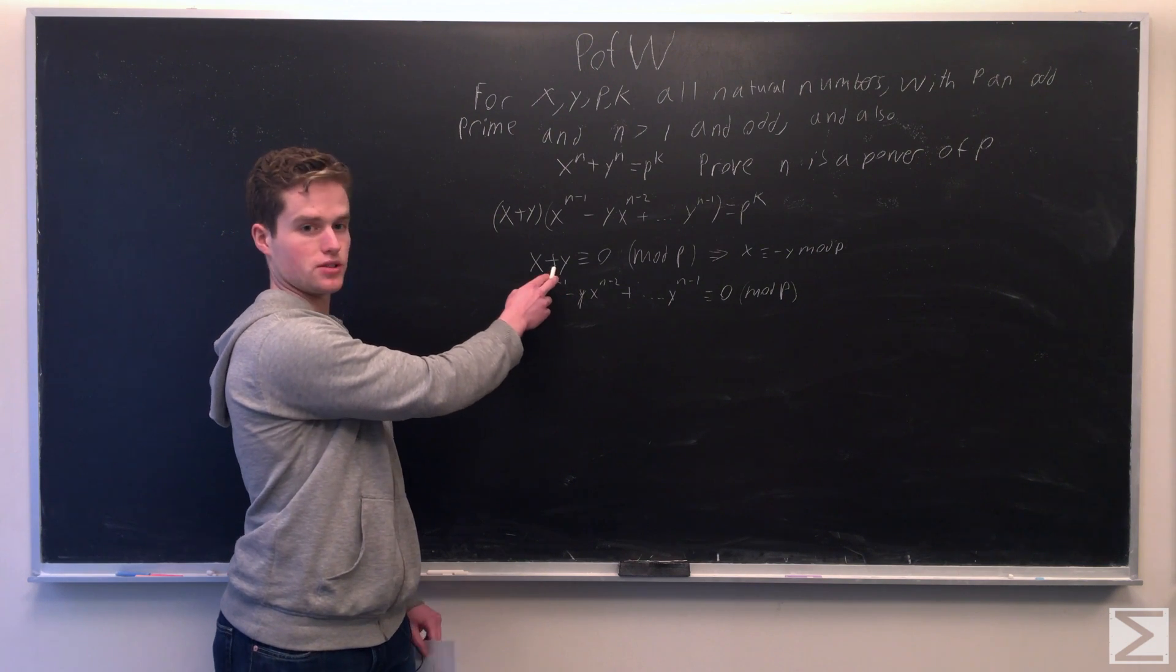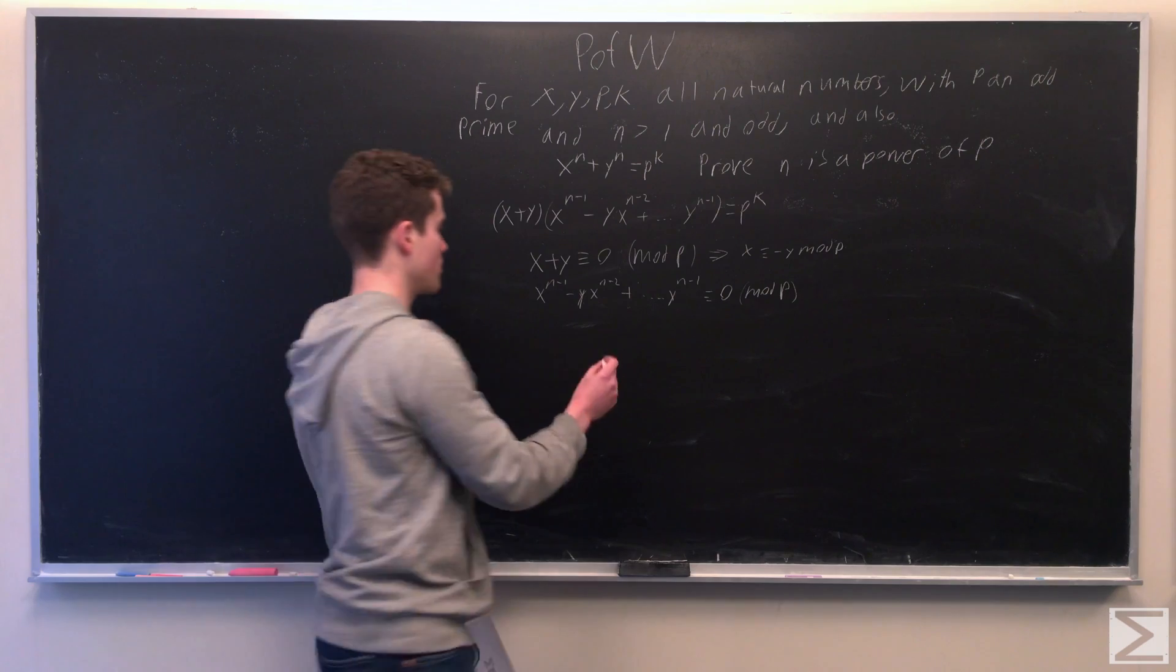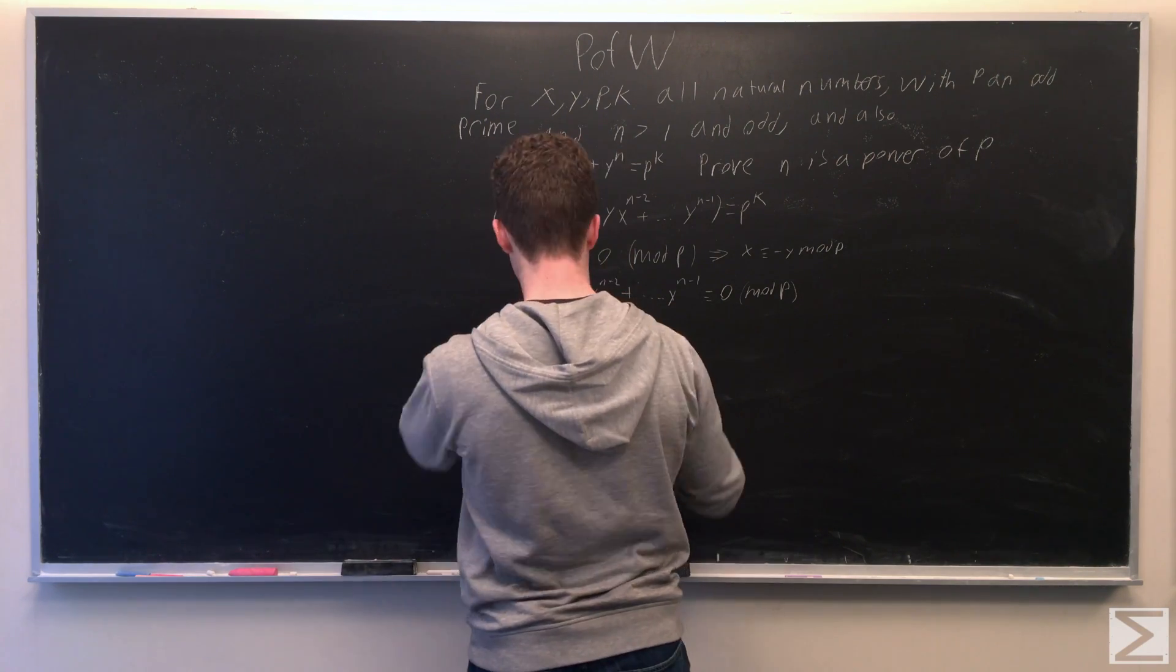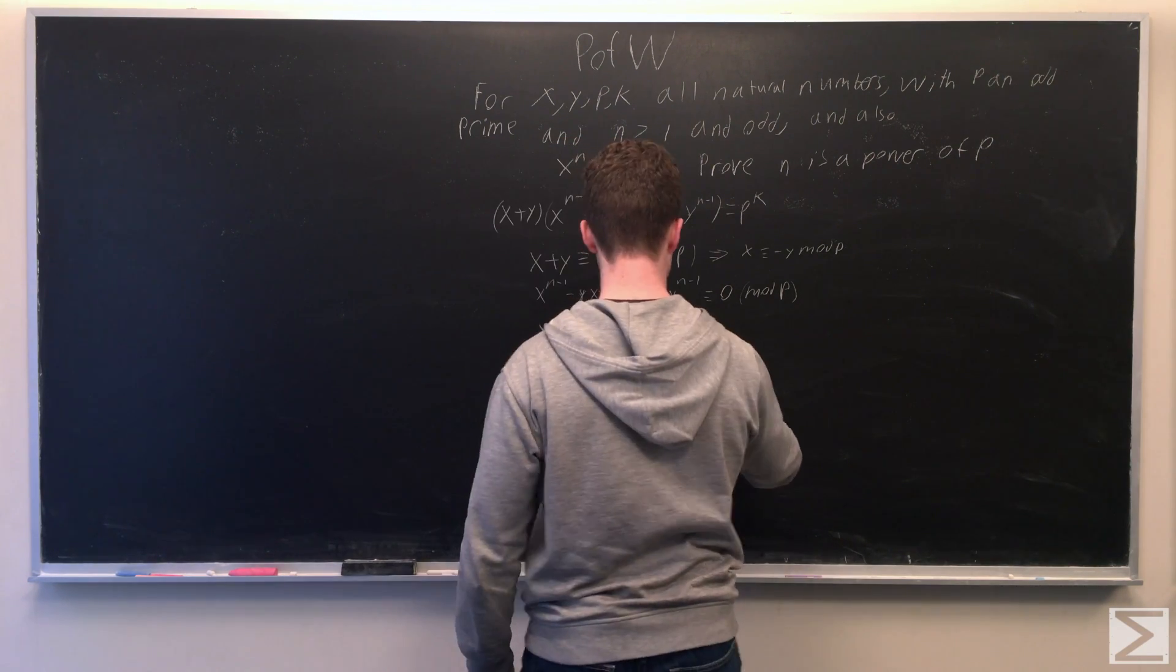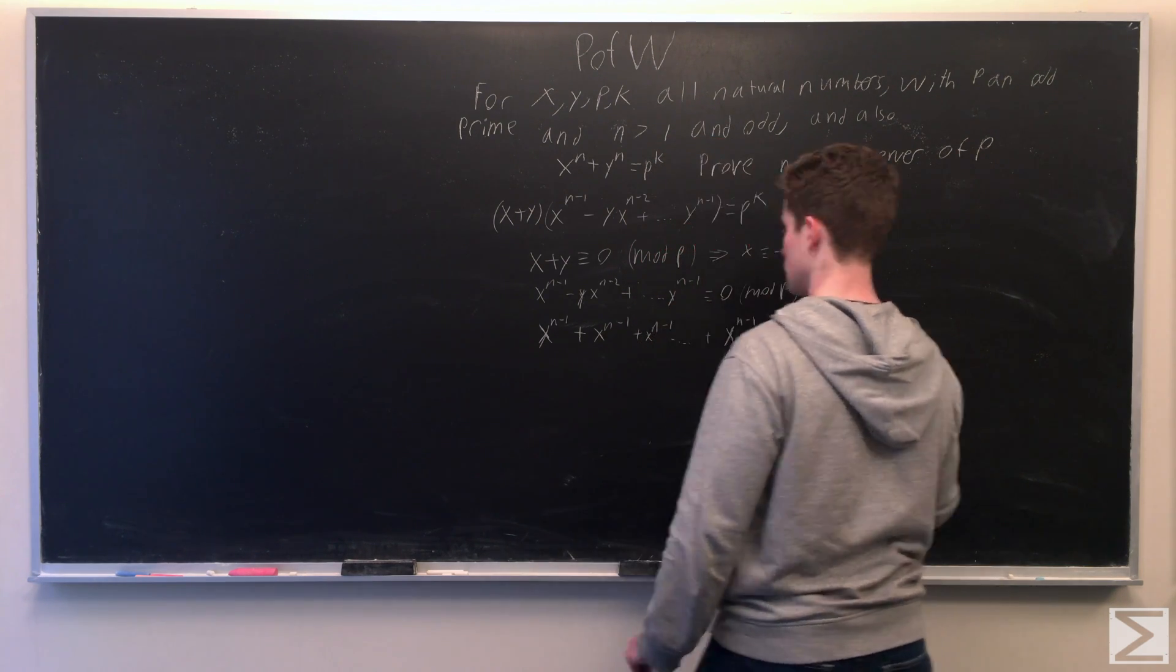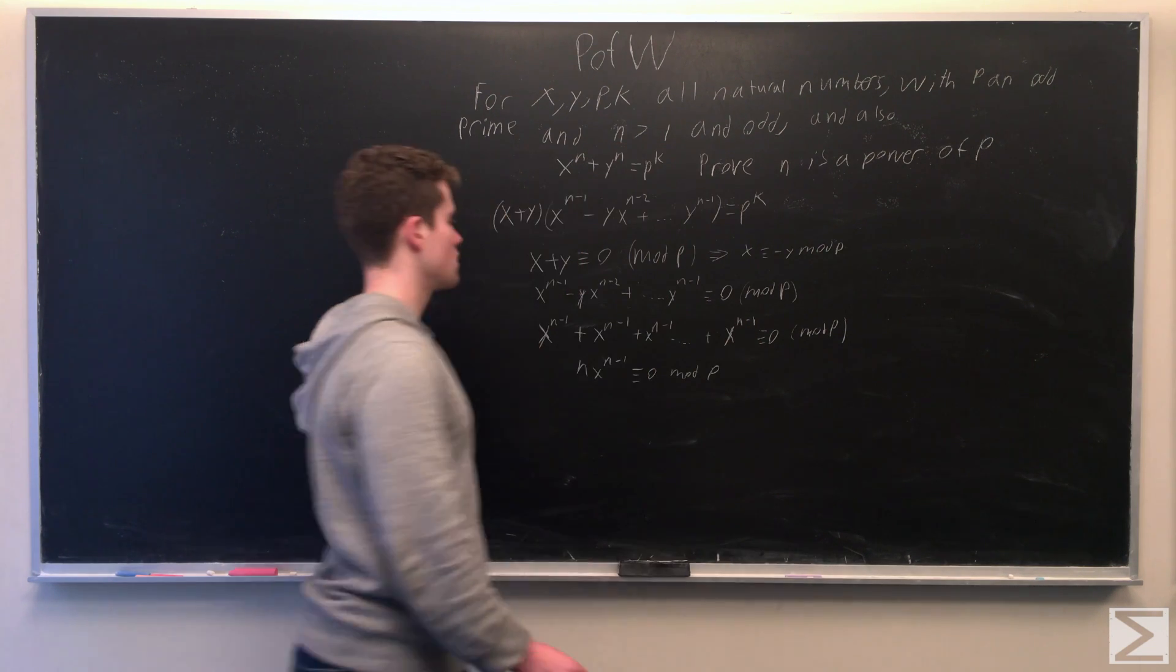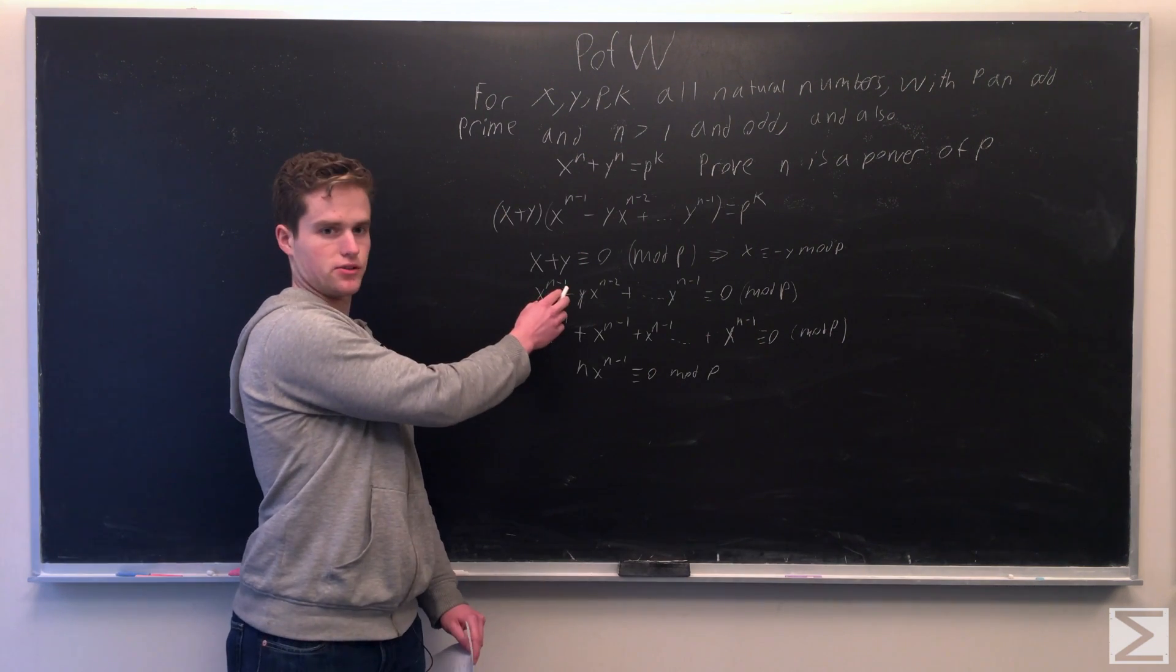And then using the top equation, we can plug that into the bottom equation and get something like... So because x plus y is congruent to 0,